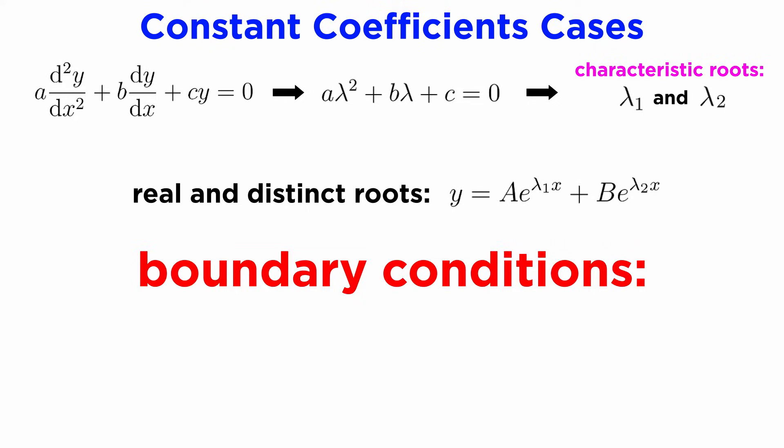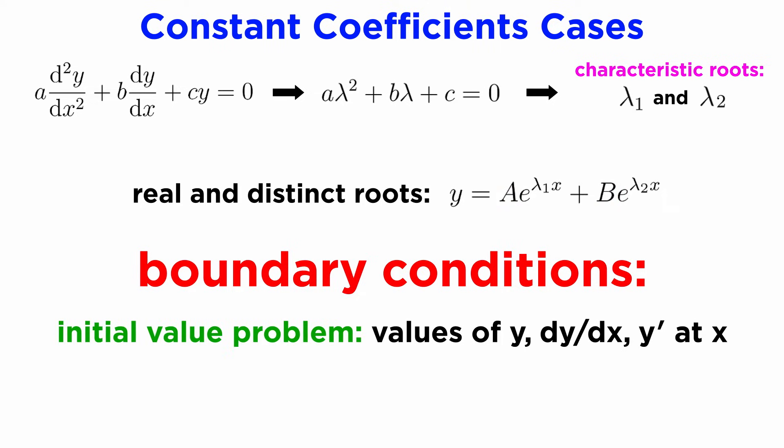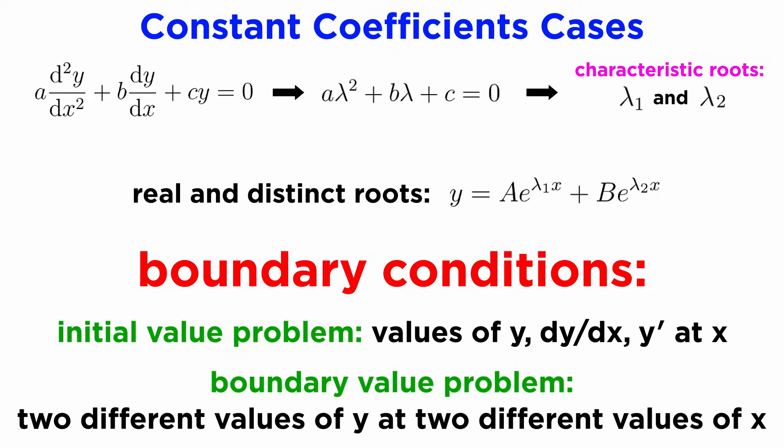Now let's look at how to use boundary conditions with this type of DE. Since we have two unknown constants A and B in our general solution, we will require two different boundary conditions to completely identify a particular solution. Sometimes these will be given to us as the values of the function y, as well as its derivative dy dx, or y prime, at some point x. This is called an initial value problem, or IVP. Other times we might be given two different values of y at two different values of x, which is a boundary value problem, or BVP.